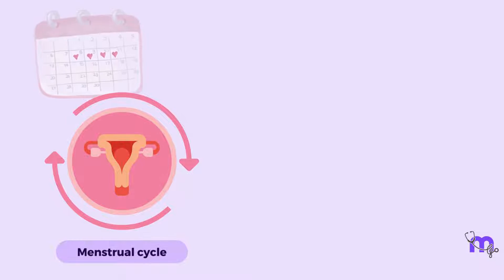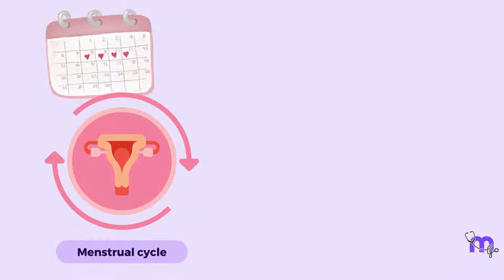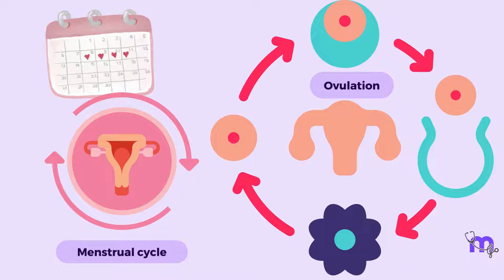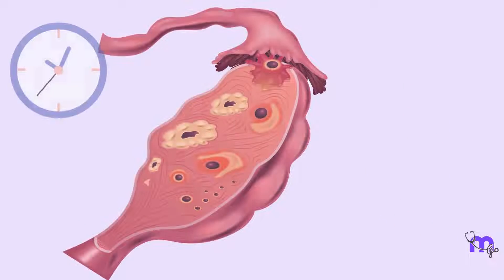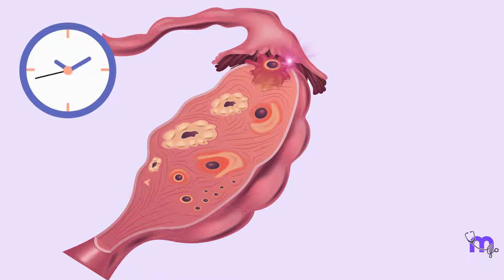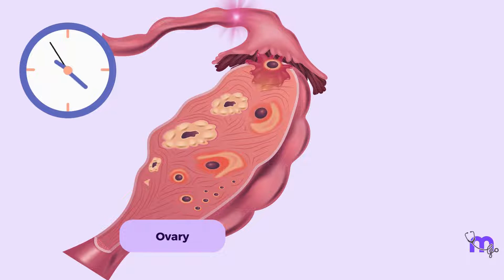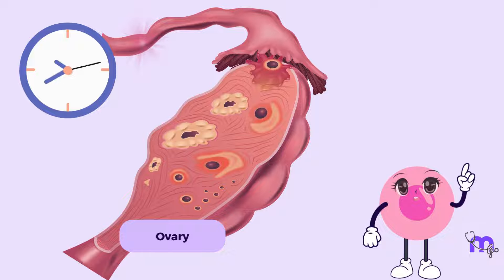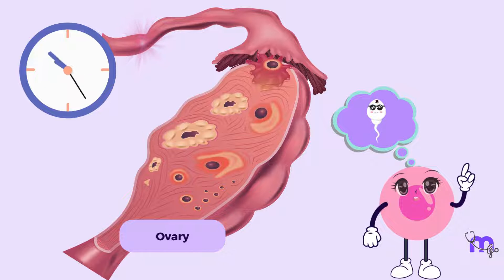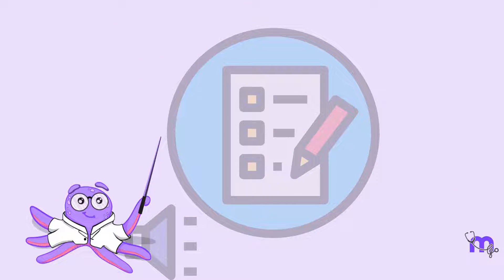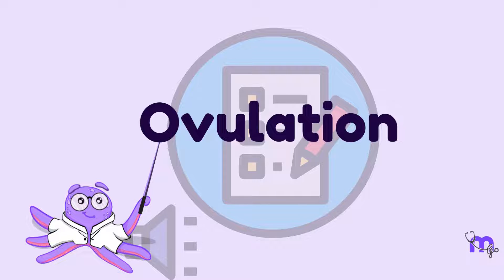As the menstrual cycle progresses, ovulation takes center stage. With perfect timing, an egg emerges from the ovary and journeys through the fallopian tube, eagerly awaiting the arrival of sperm. Let us now define and describe the process of ovulation.